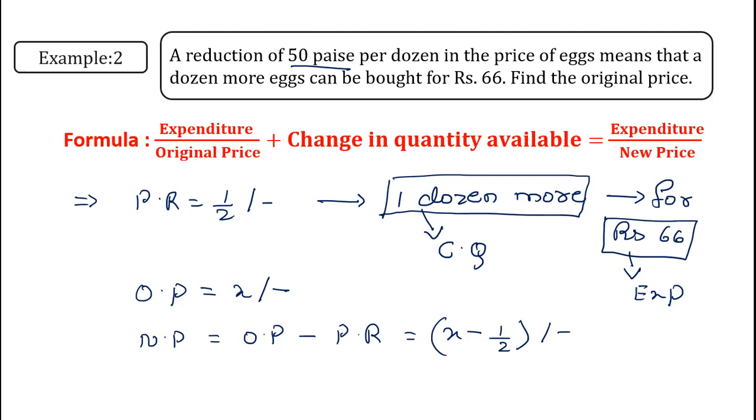Now since we have all the values to substitute in the formula, substitute them and solve the given problem. It will become 66 upon x plus one is equal to 66 upon x minus one upon two.